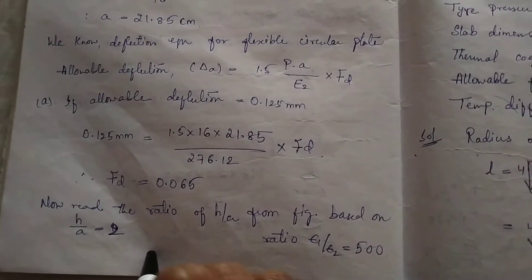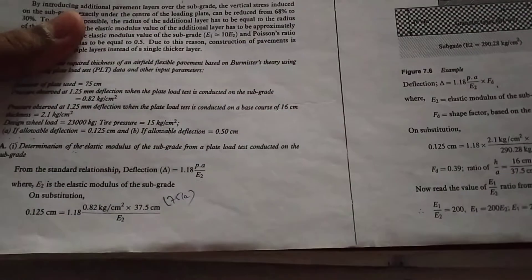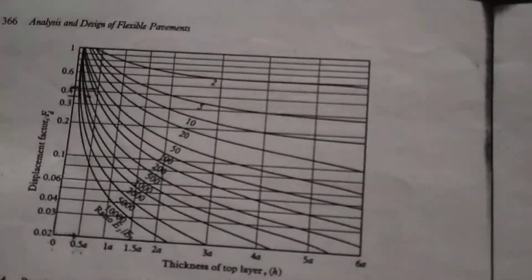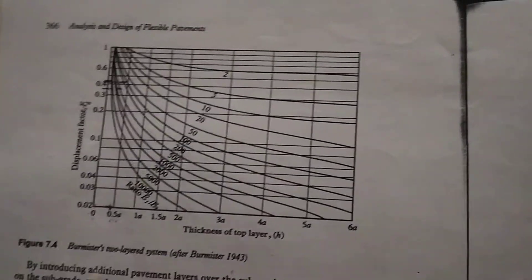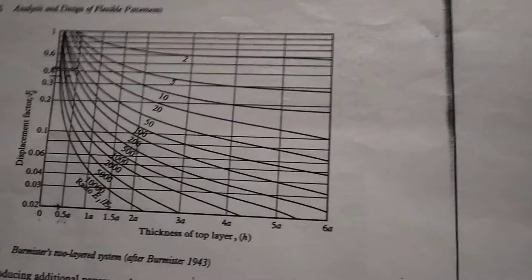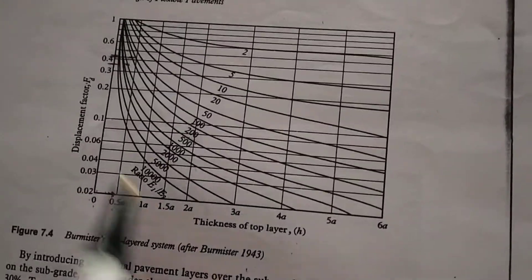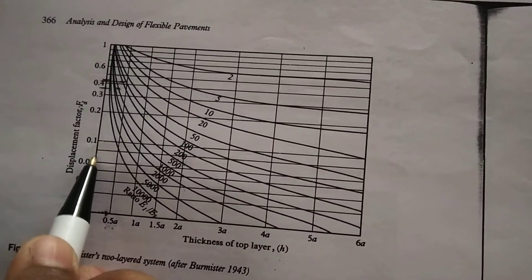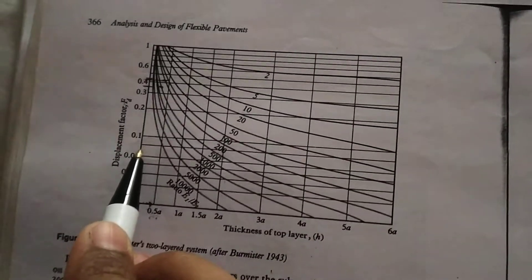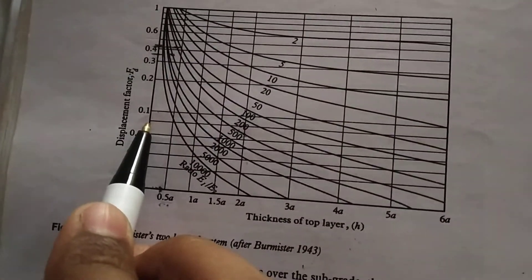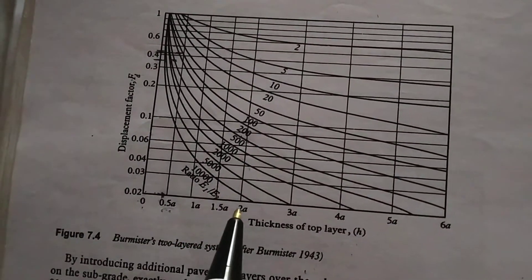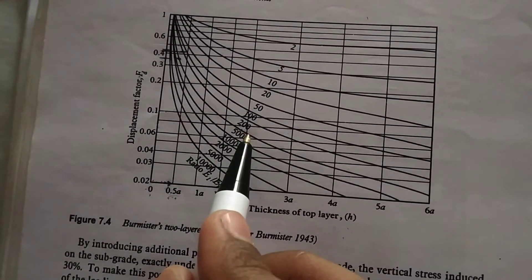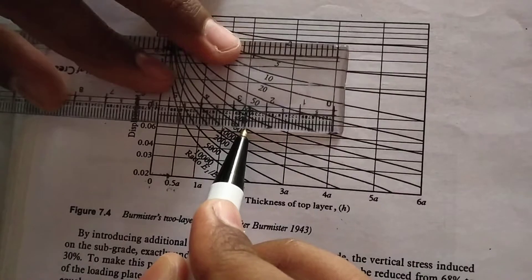I will show how we will get the value for E1. E2 we have, E1 I have to calculate. Ft we have as 0.065. 0.065 will come around here. And H by A, I have to just take the scale like this, join 0.065.